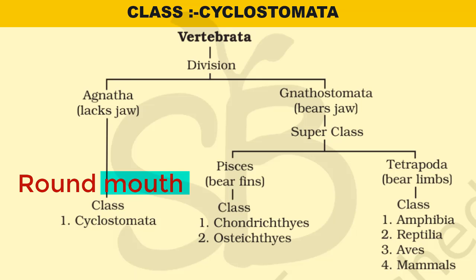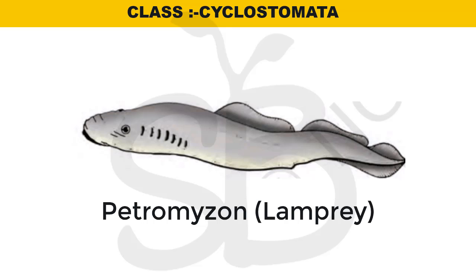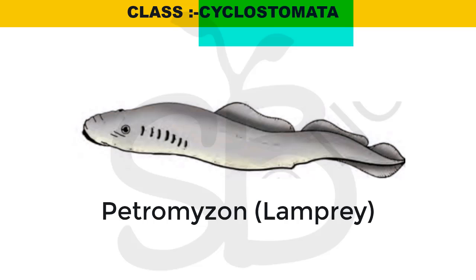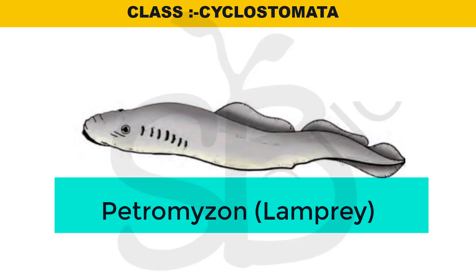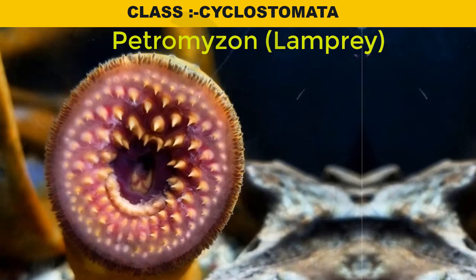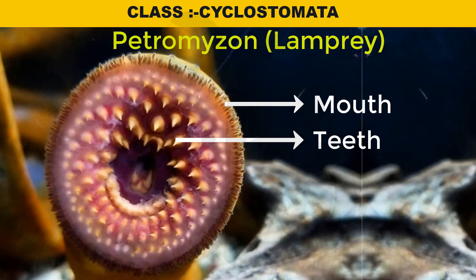This is a round mouth for our class Cyclostomata members. So Cyclostomata means a round mouth. This is a Petromyzon or lamprey. This is the lamprey structure — this is the mouth, and these are the teeth.